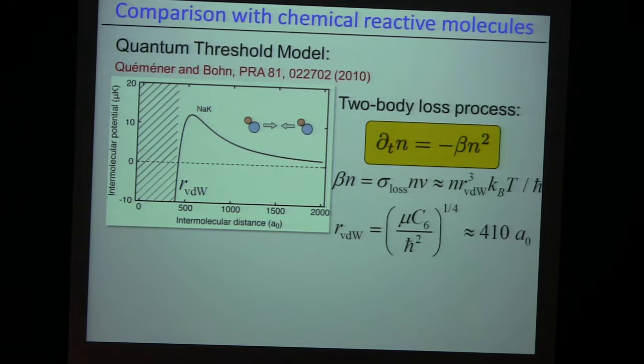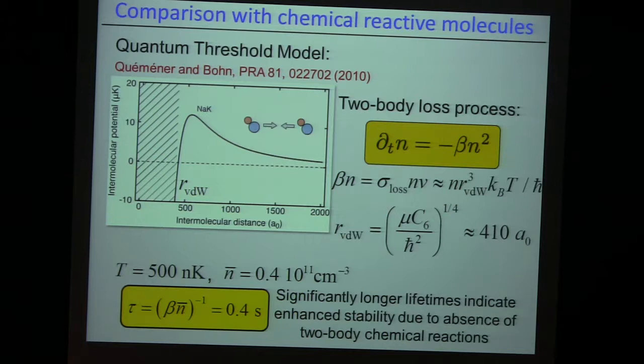At low temperatures, the only way spin-polarized molecules can meet is via P-wave collisions, which have this huge P-wave barrier — actually 12 micro-Kelvin, but we live at around 500 nano-Kelvin. You can ask what is the typical rate at which these particles would tunnel through this barrier. If they tunneled through and we had a chemical reaction, we would get a certain loss rate of around 400 milliseconds or so with our densities and temperatures, whereas we have many seconds lifetime.